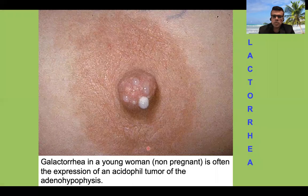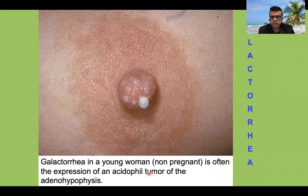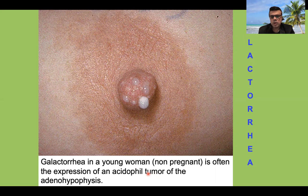Galactorrhea in a young non-pregnant female is a fairly common clinical sign. Galactorrhea and amenorrhea together are the leading signs and symptoms of prolactinomas.